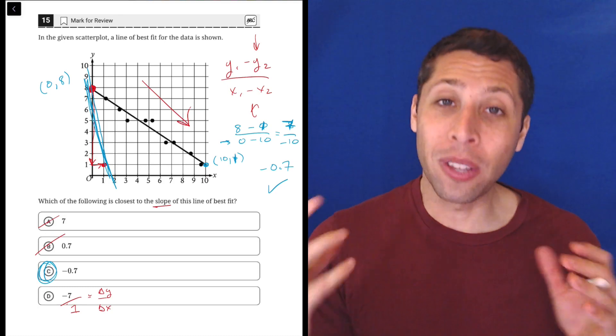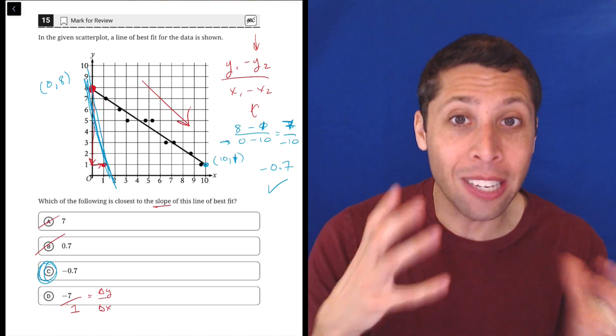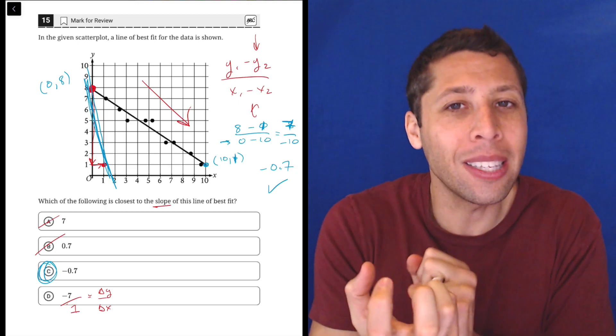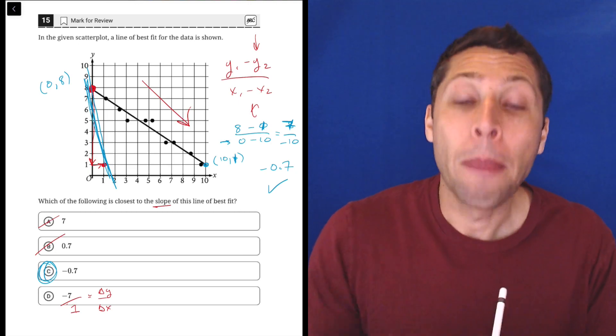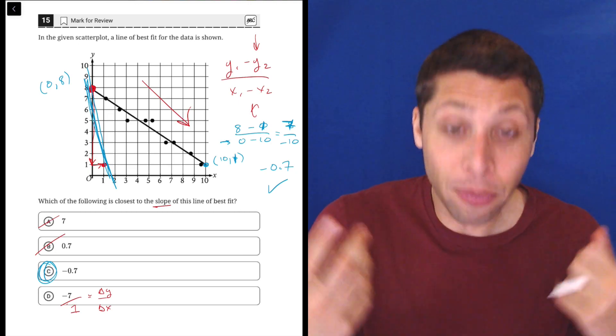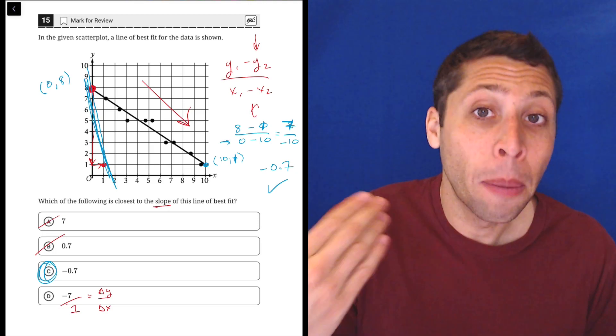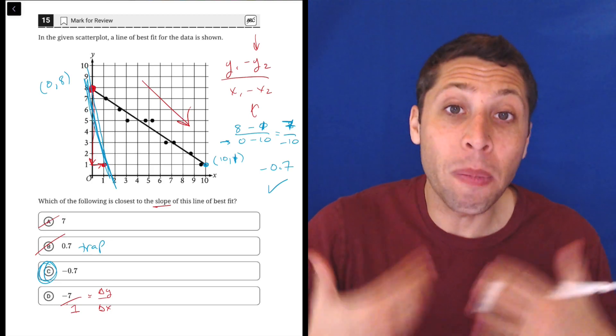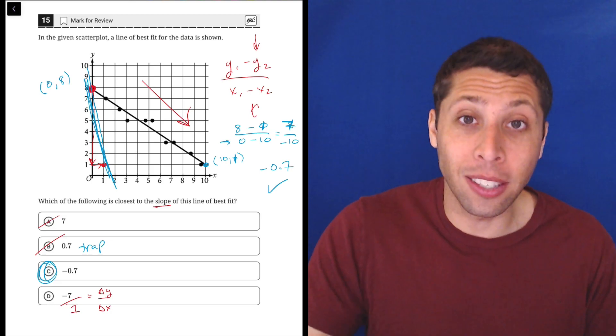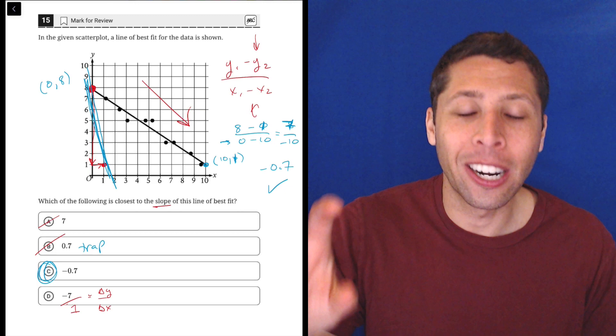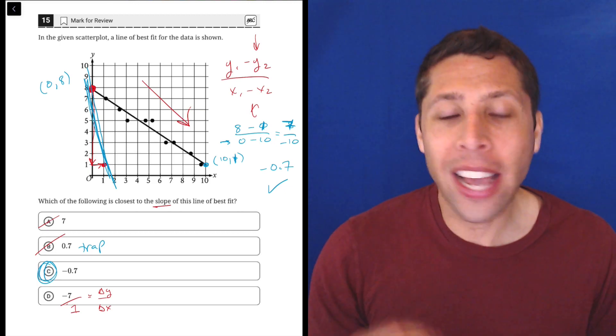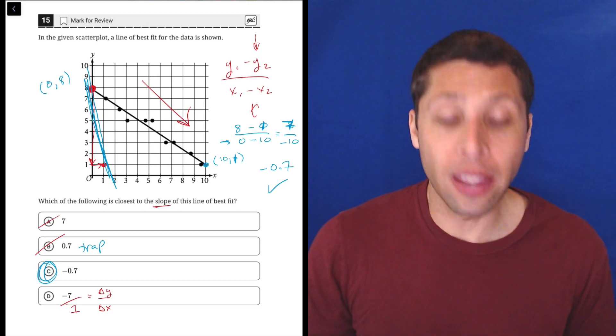Our brain really likes it to just be 10 minus 0. So this is the most common mistake with the slope formula - those negatives make us rearrange the points in a way that doesn't fit the formula but produces nicer numbers. If we did that here, we would get 7 over positive 10, we'd get 0.7 which is choice B. We might think we've done everything correctly because we have this very clear answer and it's one of the answer choices, but we lost a negative, we made a mistake.